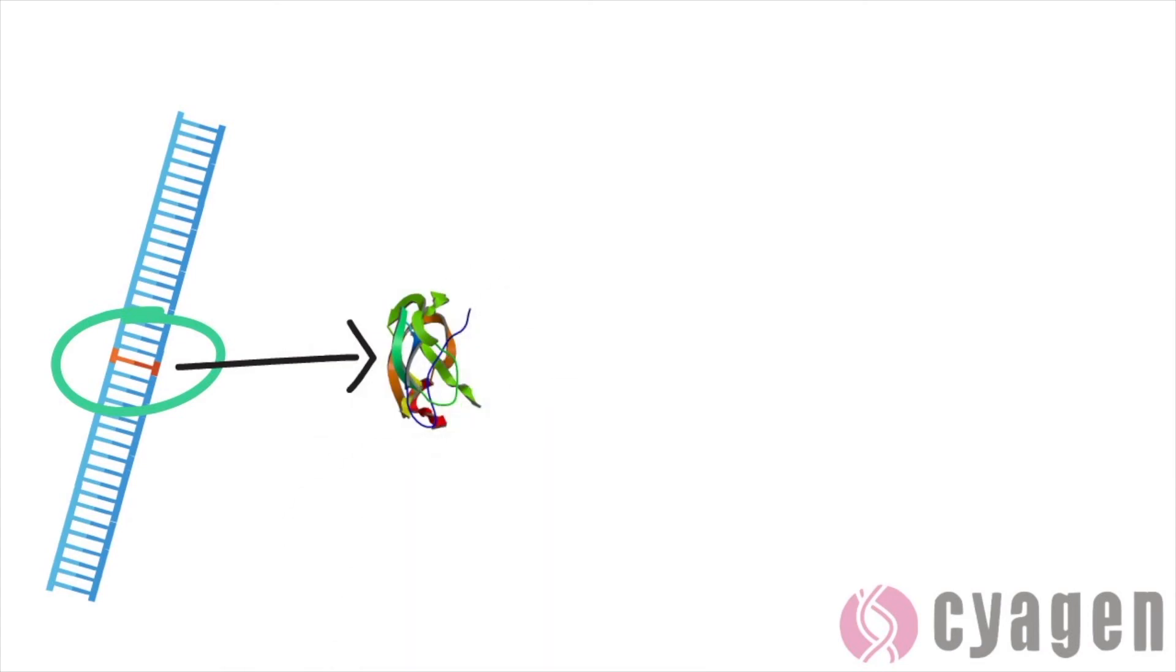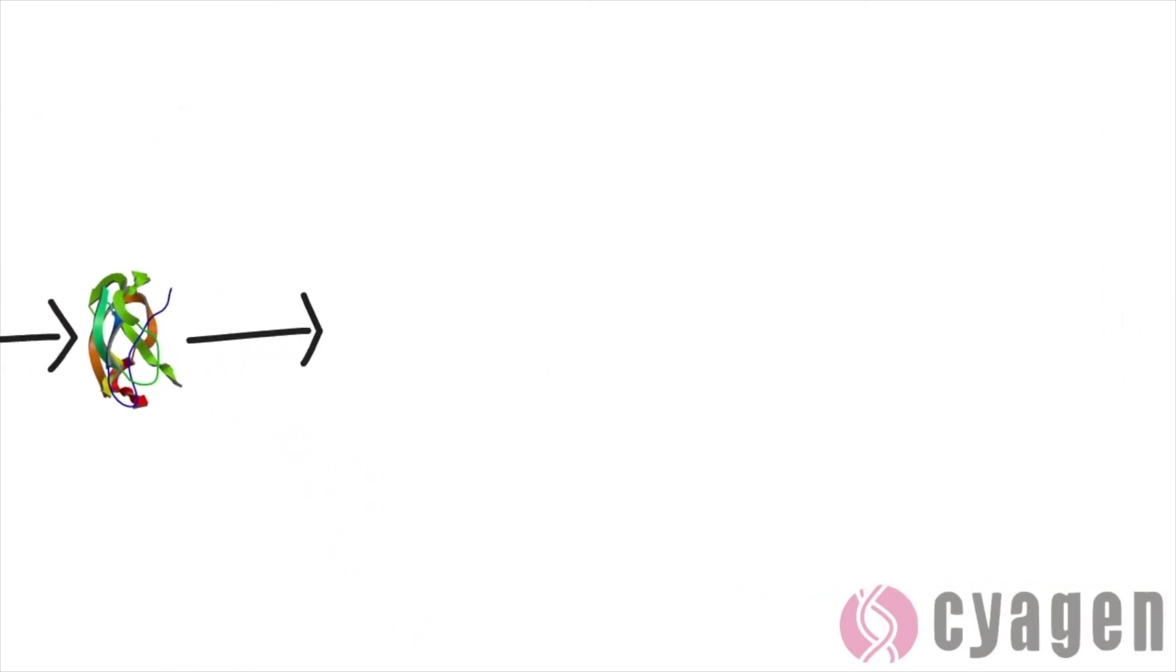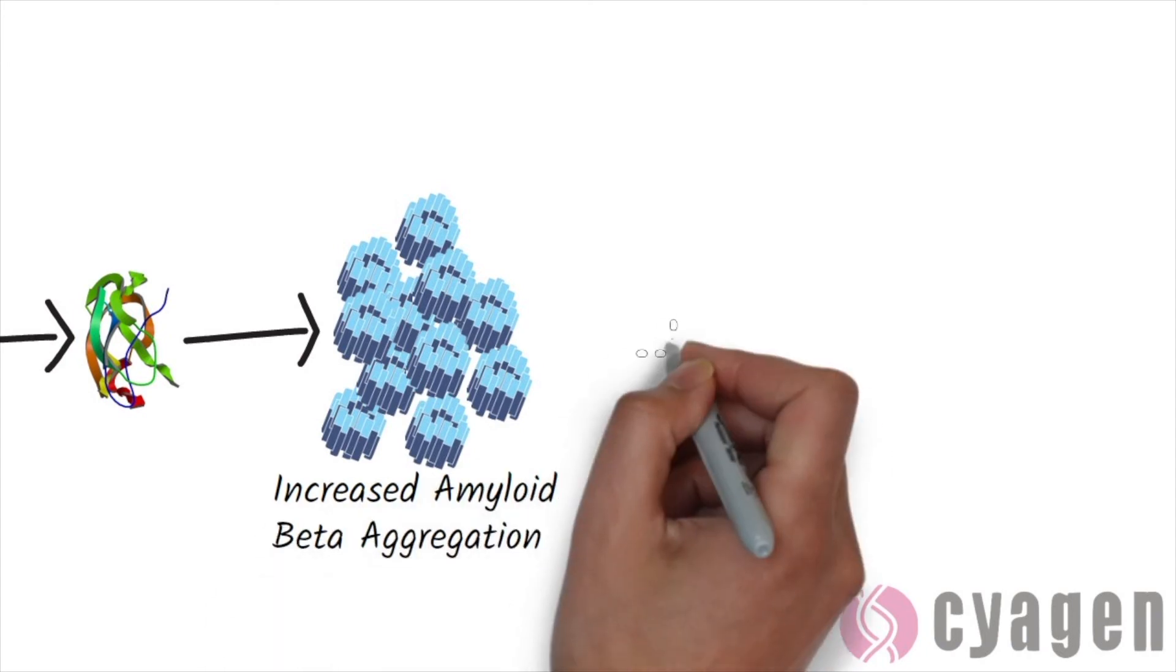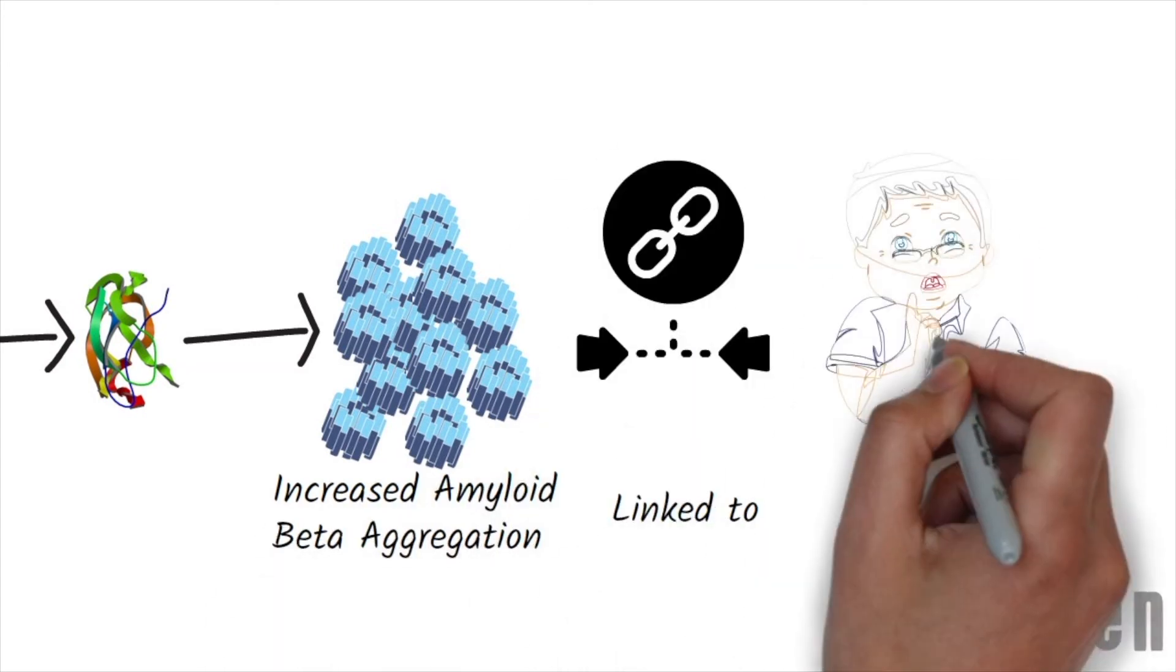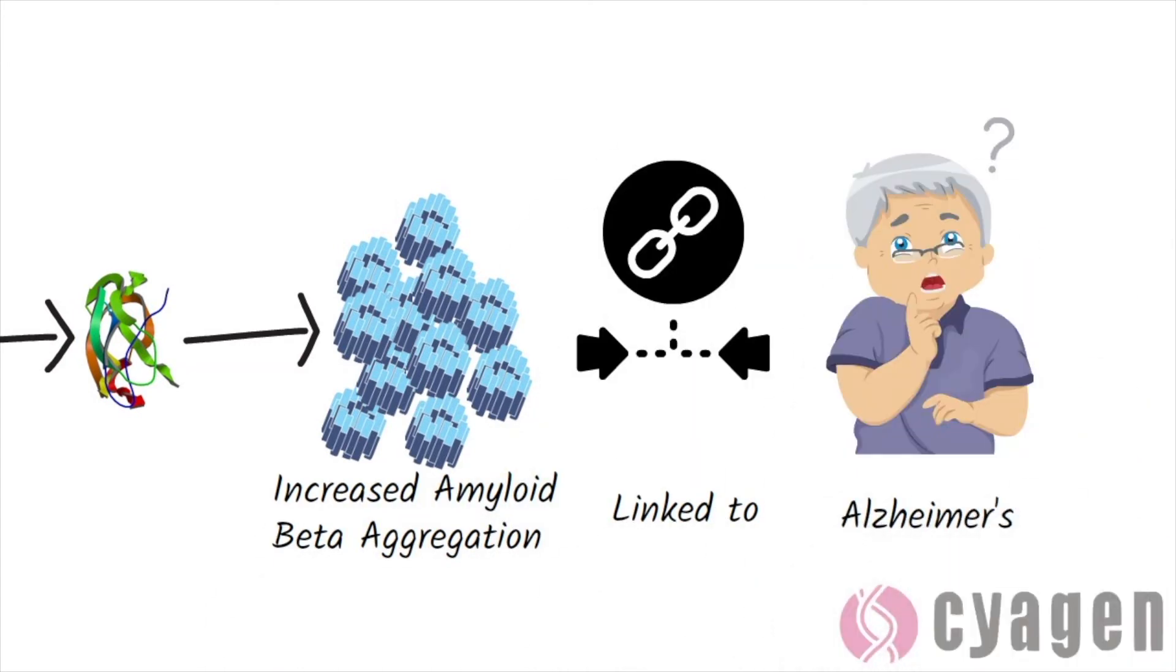Mutations of the APP gene lead to an increased likelihood of alpha-beta aggregation in the brain, and in turn are linked to Alzheimer's disease.